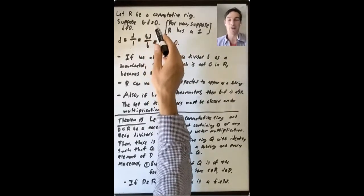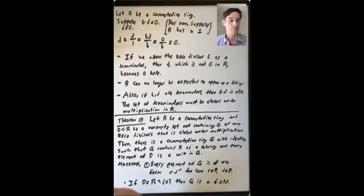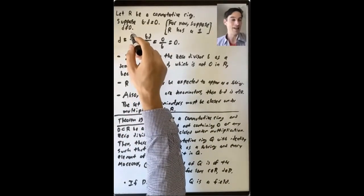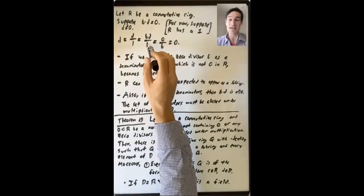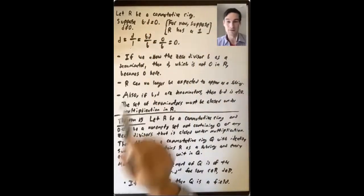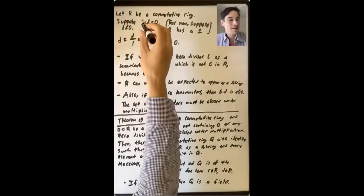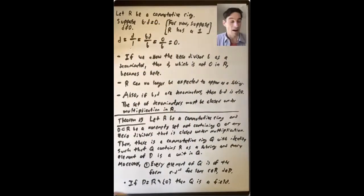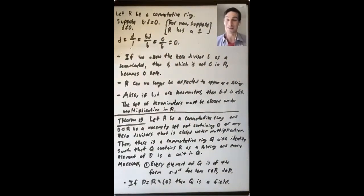Let's say that b times d equals zero in R, and d is not zero. For simplicity, suppose R has a one. Then d should be the same as the equivalence class d over one. But in this equivalence class you should also have bd over b. Since bd is zero, you'd have zero over b, which should be zero. So d equals zero in this ring — something that is not zero in R has become zero.